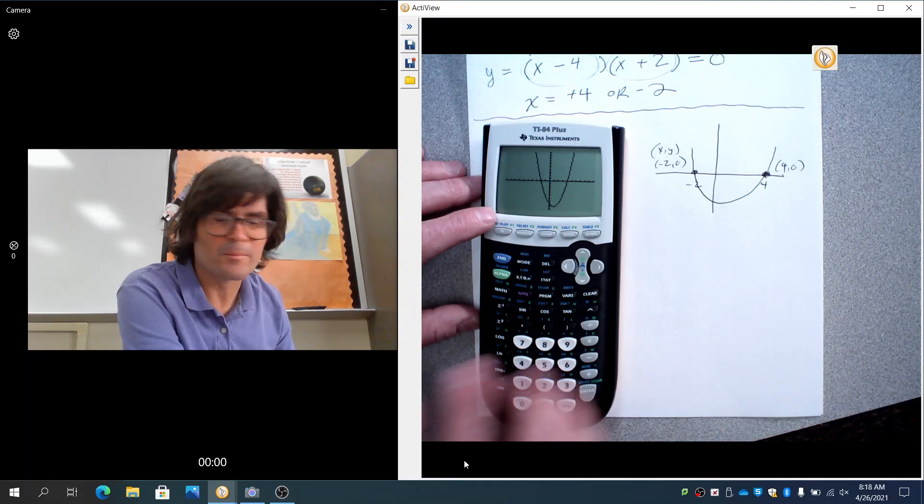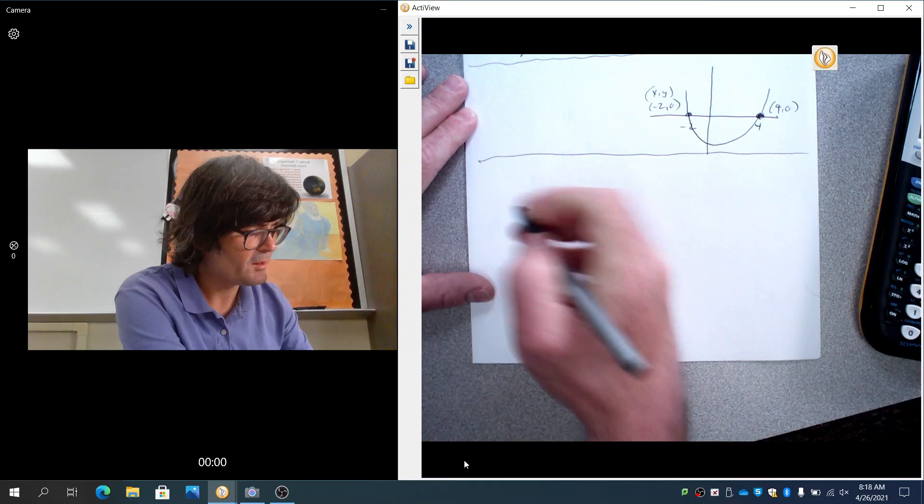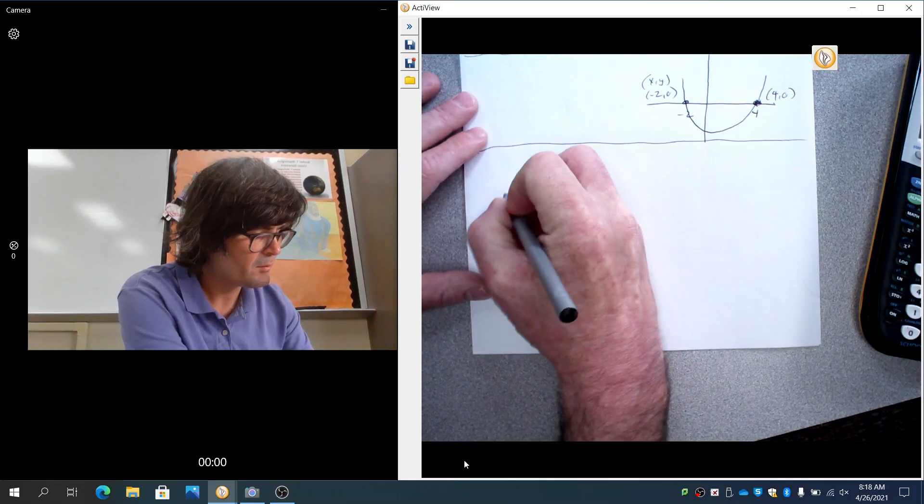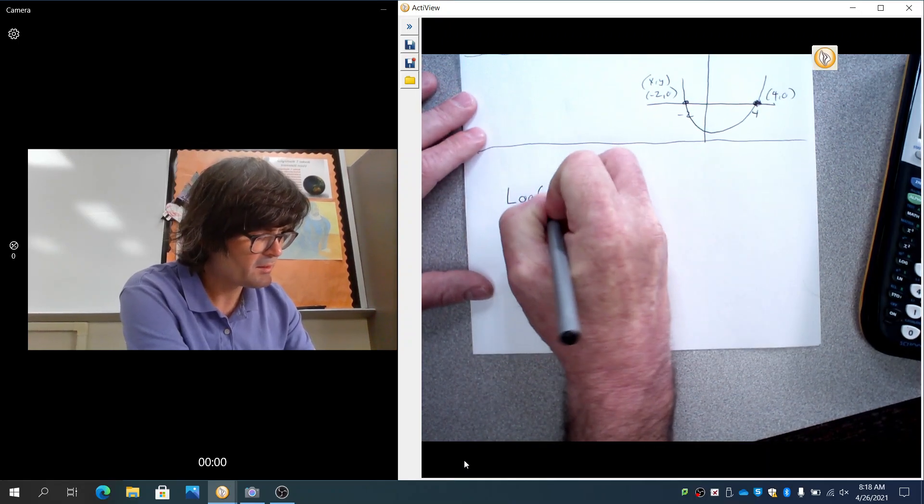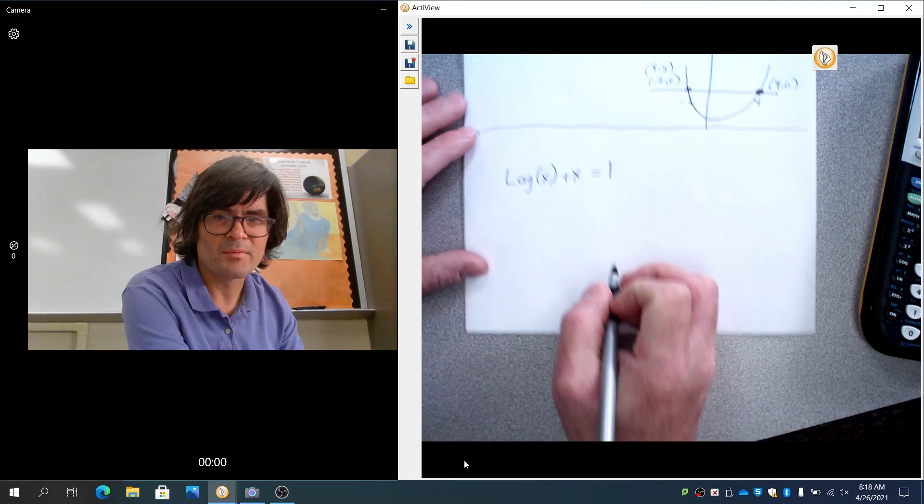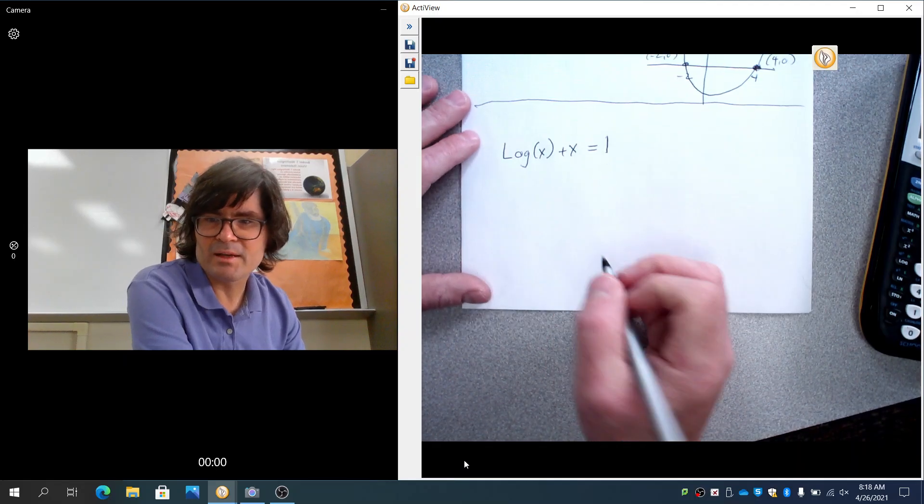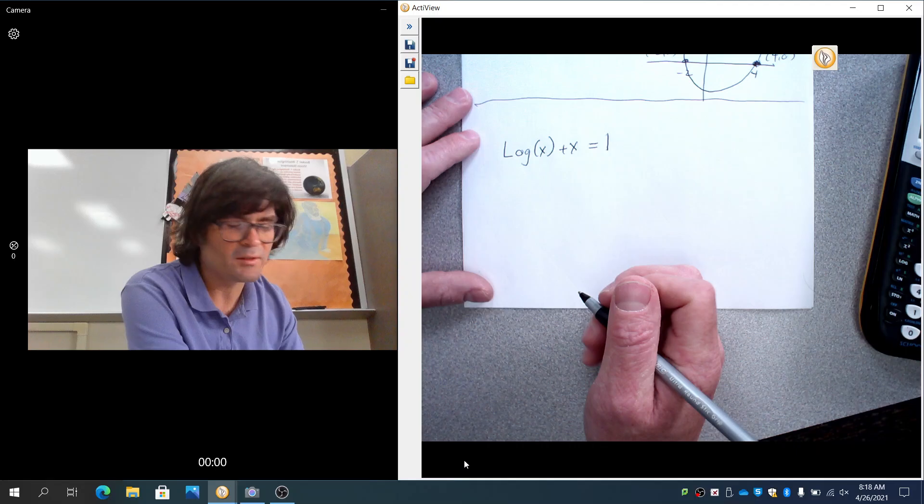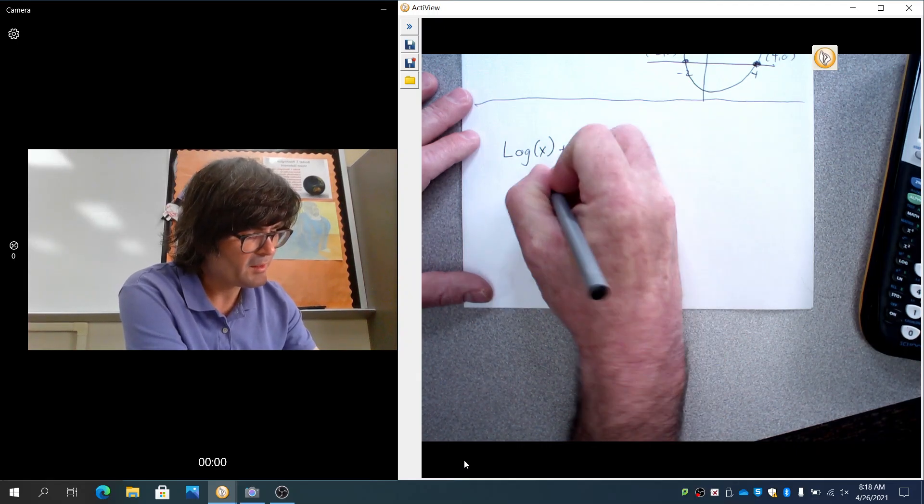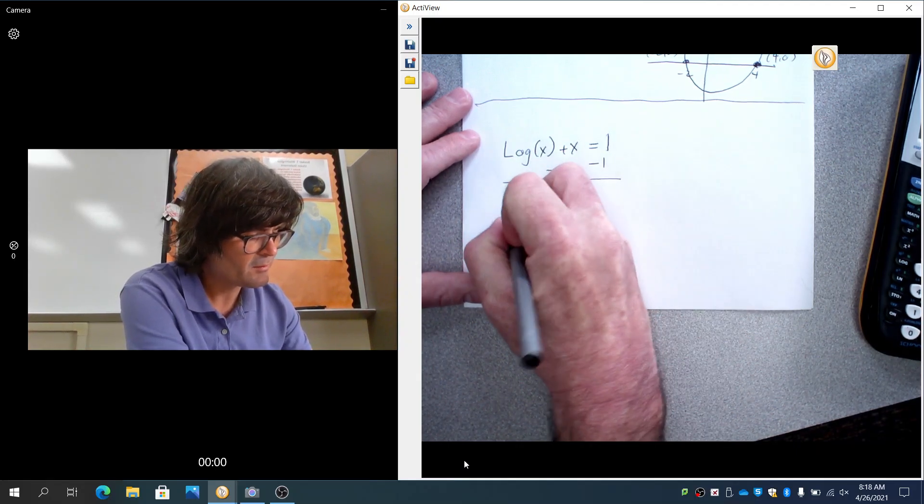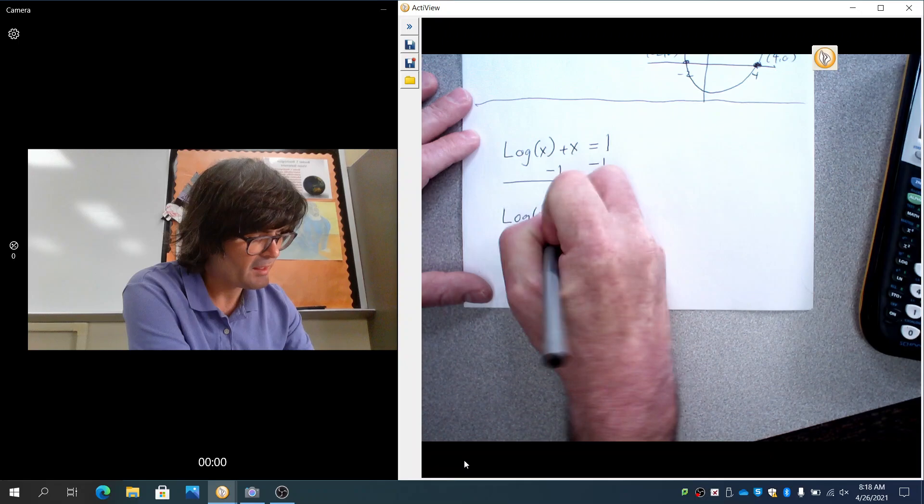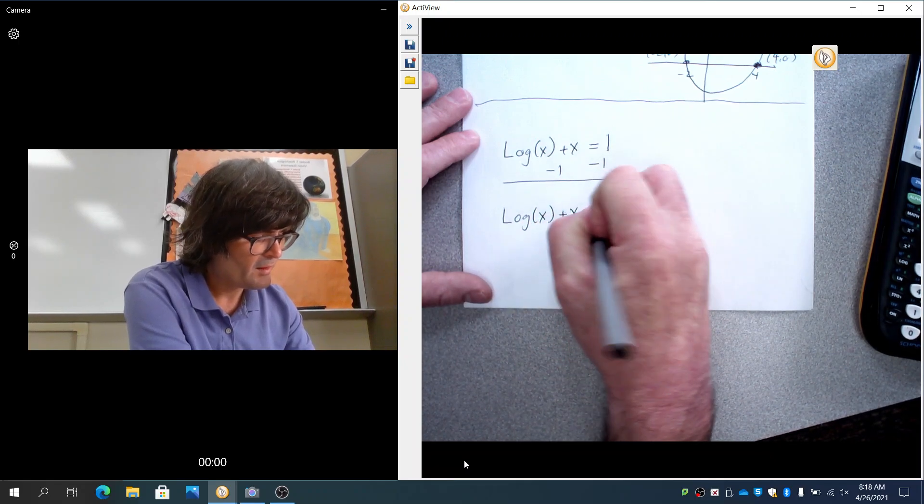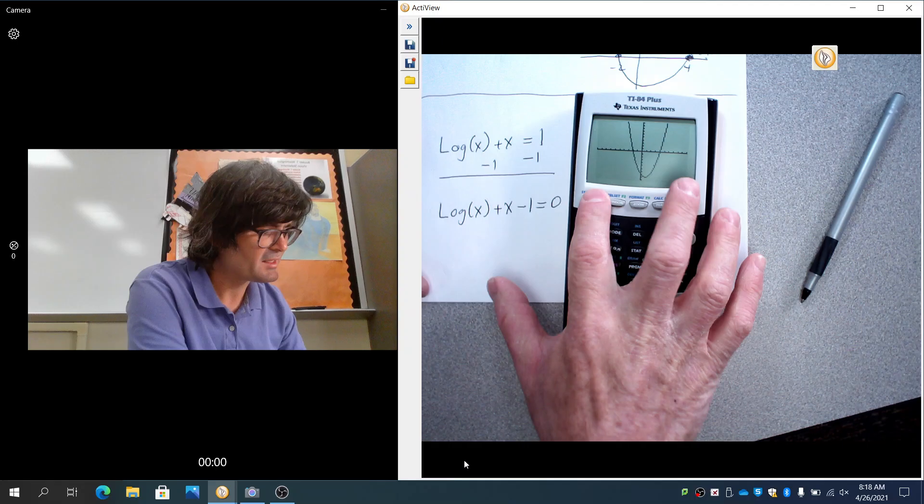I want to do one more. I want to do one that's kind of weird. I want to do log of x plus x equals 1. This one I have no idea how to solve. There's no nice factoring to do. So what I'm going to do is I'm going to just take away one from both sides and we're going to get everything on one side, zero on the other. And we're going to see where it crosses the x-axis.